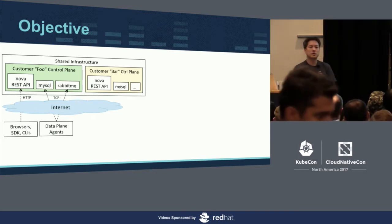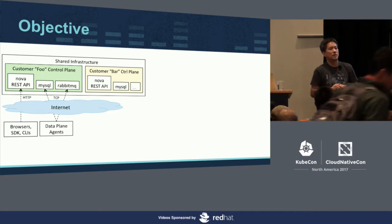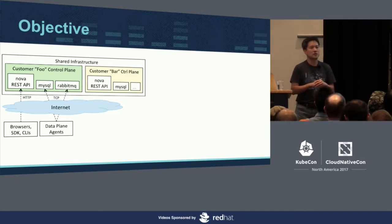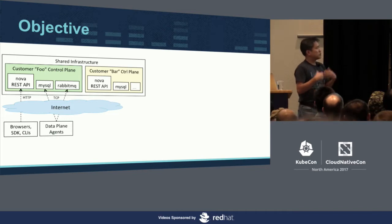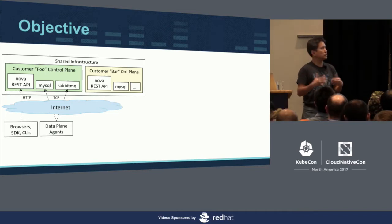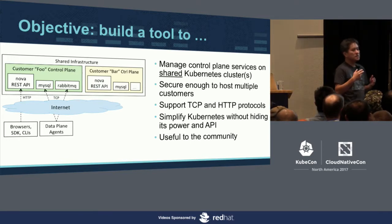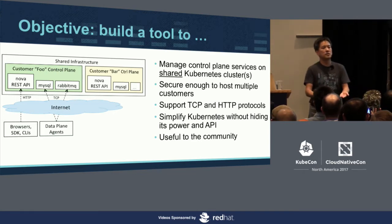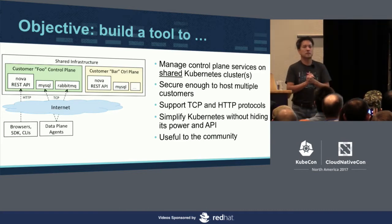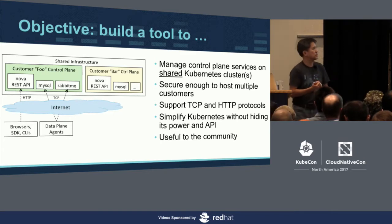We are currently in a transition period, moving all of our control plane services from VMs to containers. We want to use Kubernetes and take advantage of it, running everything on a shared Kubernetes cluster to gain high utilization and all the benefits Kubernetes provides. During this transition, we wanted to build a set of tools to help our ops team automate as much as possible — something that lets them easily provision new customers and new regions, deploy services, make sure they're exposed on the internet with DNS names, secure everything, isolate customers, and support multiple protocols such as HTTP and TCP binary protocols.